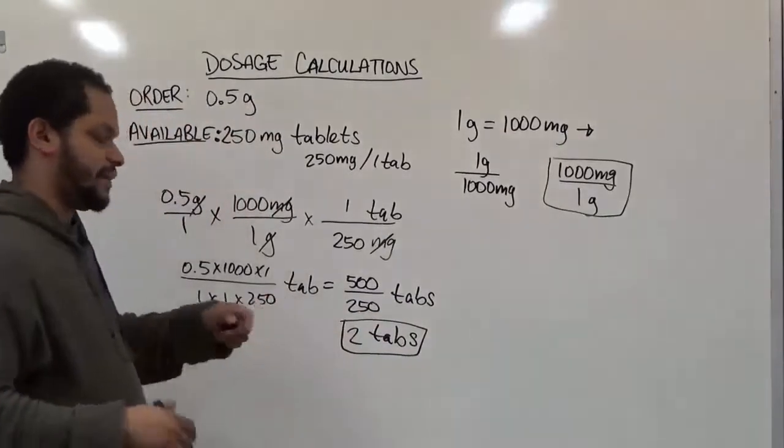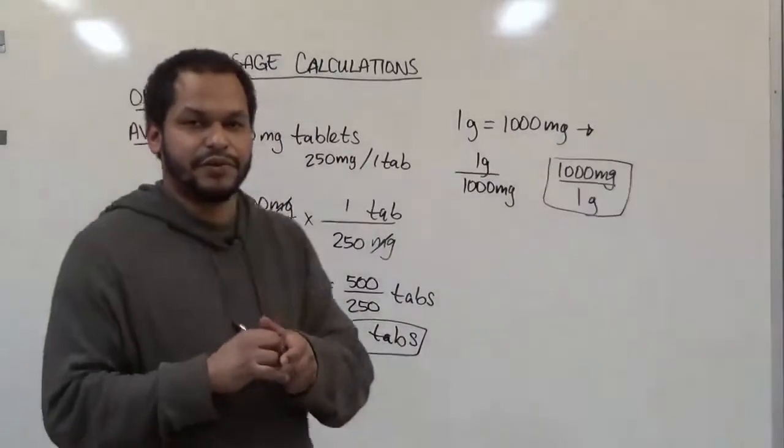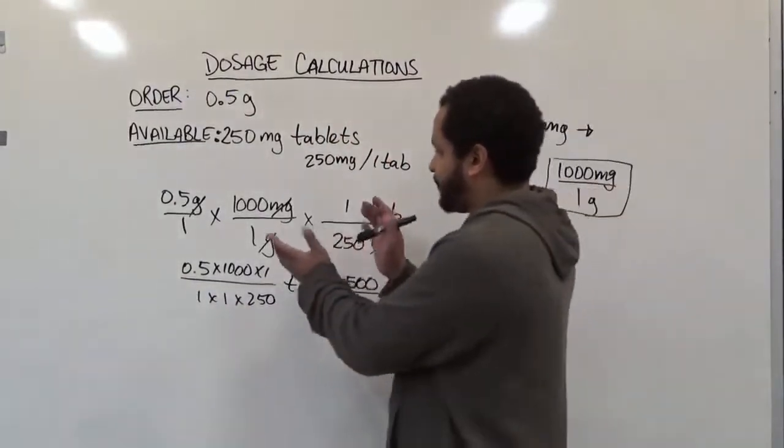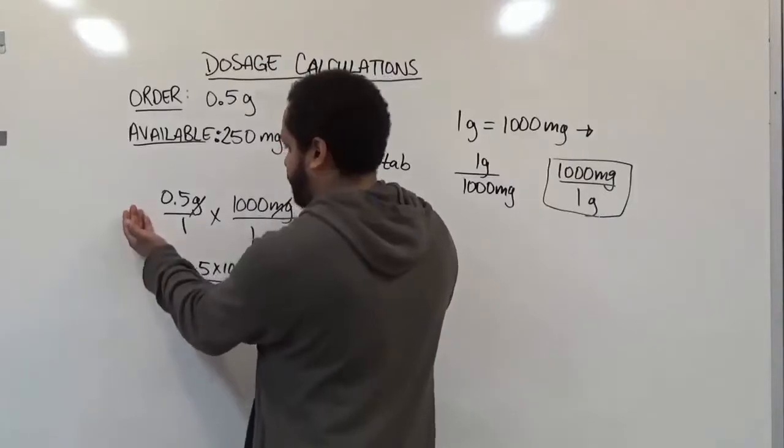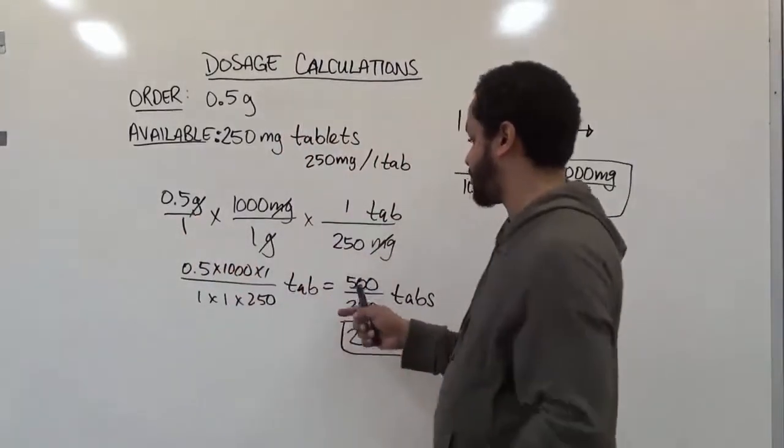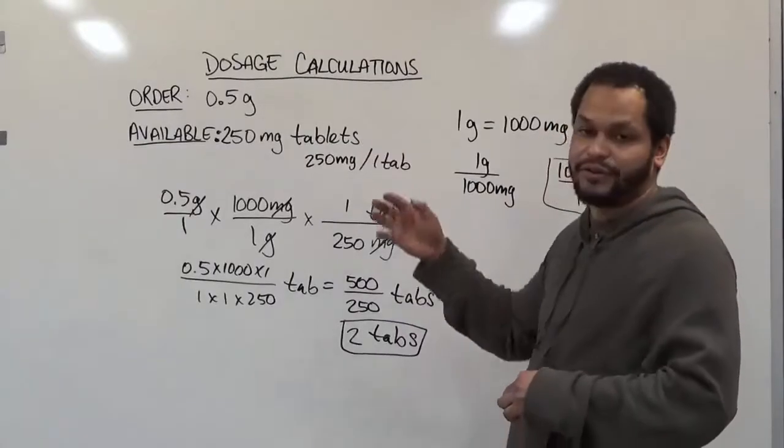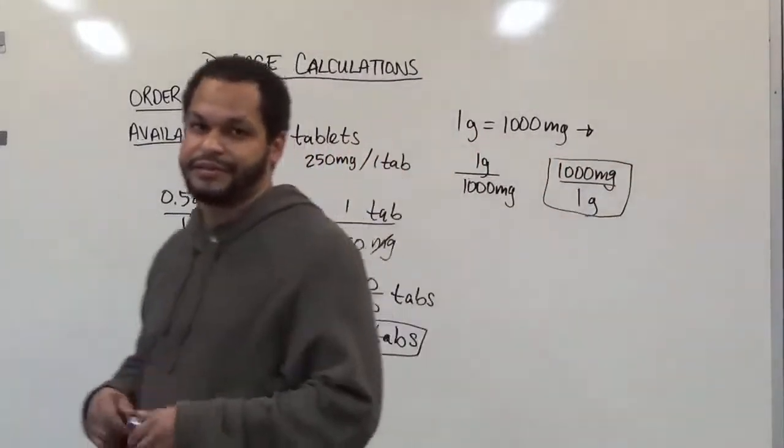That's our solution. If you use the other forms we explored earlier, you first convert 0.5 grams to 500 milligrams, then use direct proportion or the order over available form. Thank you.